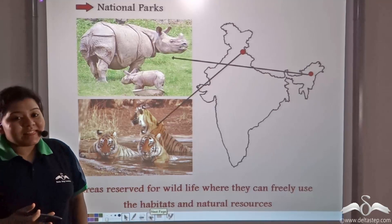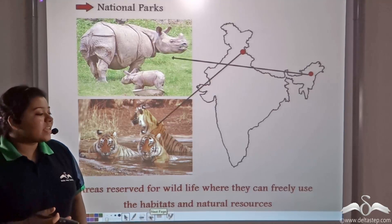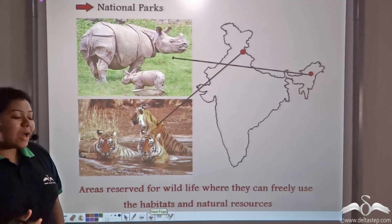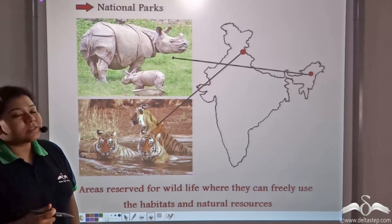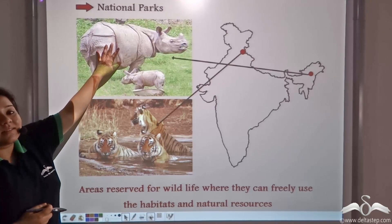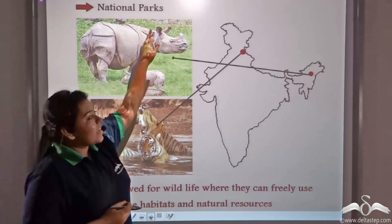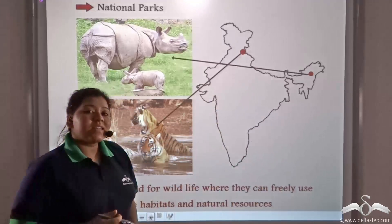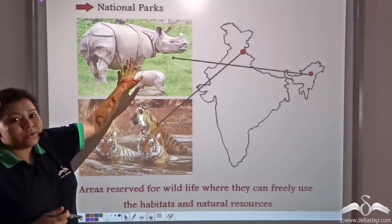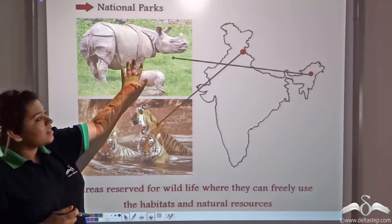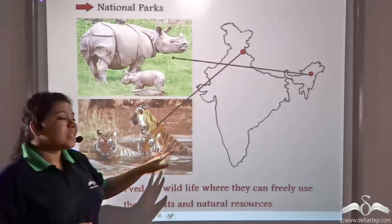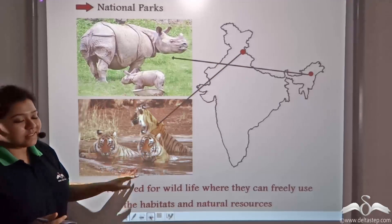Areas reserved for wildlife where they can freely use the environment, the habitat, and the natural resources are known as national parks. Examples include the Kaziranga National Park in Assam, which is famous for its rhinos, and the Corbett National Park, which is famous for its tigers.